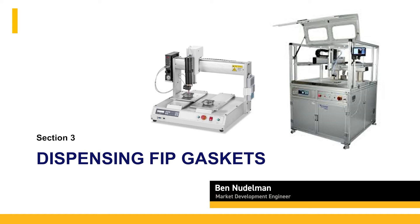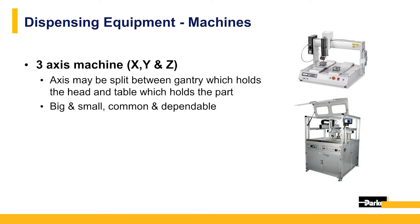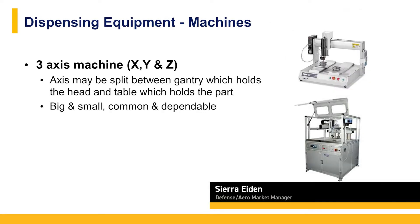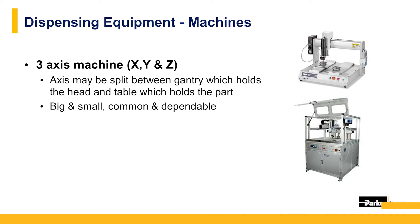Now let's talk about how to dispense form-and-place gaskets. Three-axis dispensing machines have the x-axis — left or right — the y-axis towards you or away from you, and a z-axis, which is up from and down to the part. These machines may have all three axes in a gantry over the part to be dispensed, or the table that holds the part may move, supplying one or more of the axis movements. These machines come in all sizes, from tabletops to large inline machines, and there are many excellent suppliers of this equipment all over the world.